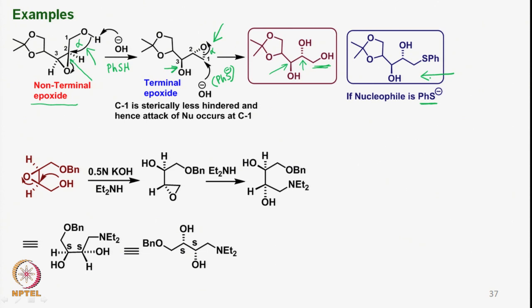These kinds of thio compounds are very important. As one can see carefully, we have asymmetric centers here and also one additional asymmetric center. There is also the possibility of hydrolyzing the acetyl moiety to generate two hydroxy groups, giving us a total of four hydroxy groups and the possibility of manipulating the carbon-sulfur bond, thereby leading to highly functionalized optically pure molecules.